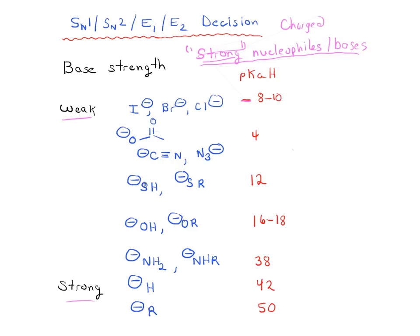So CN, N3, SH, SR minus, the pKa of the conjugate acid is about 12 here, and then we get to OH minus, OR minus, NH2, and so forth. So we're getting into much stronger base territory here. So one good way to cut it is here.